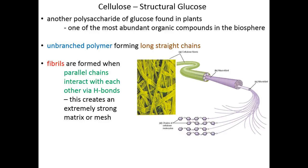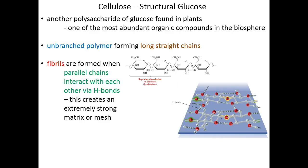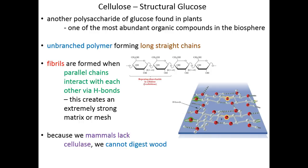Those cellulose fibers then weave together like a wicker basket to create the cell wall of a plant. There is tons and tons of glucose stored in these cellulose plant walls, all linked together and interacting with one another. Unfortunately, animals and mammals lack the enzyme cellulase that is able to cut these glucose monomers off — that's why we can't digest wood.